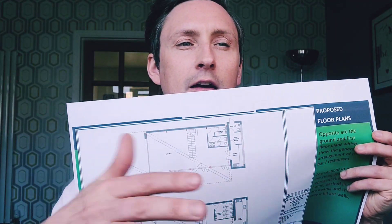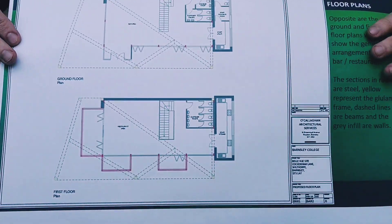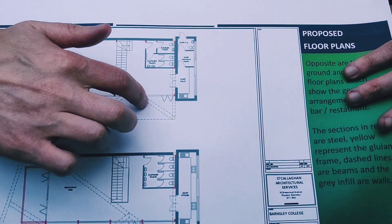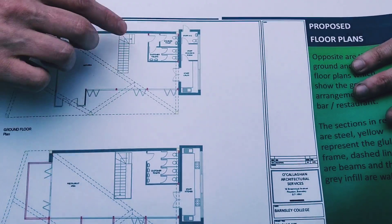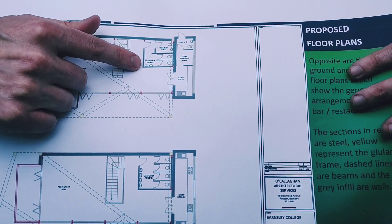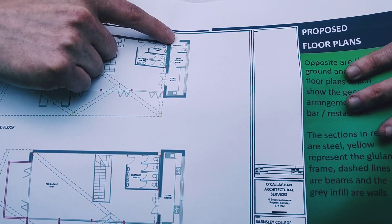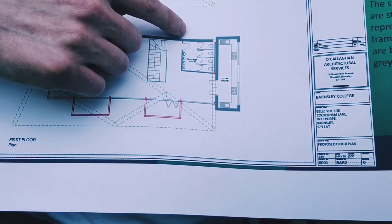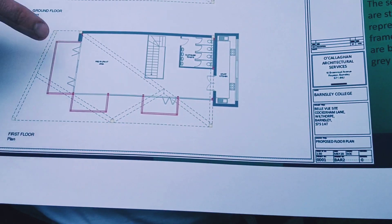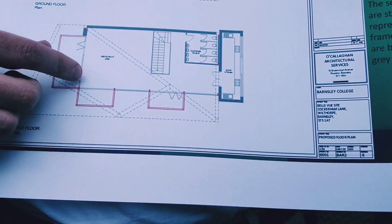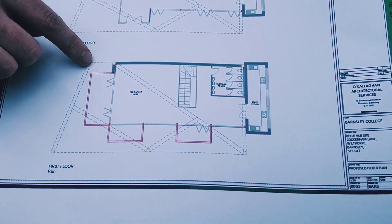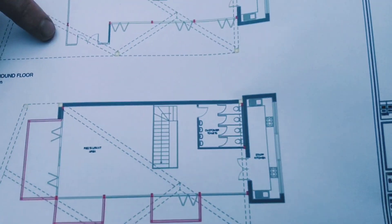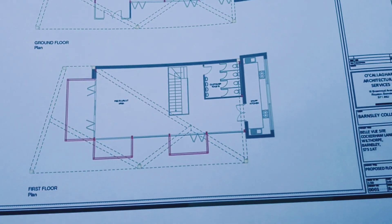Here are the floor plans for the proposed development. This is the ground floor plan, featuring access bifold doors which open out onto the seating area, stairs which go to the first floor, a disabled bathroom, customer toilets, kitchen, staff changing room and staff WC. On the first floor, accessed via the steps, there are more customer toilets, another kitchen for the restaurant, and balconies for customers to sit out on accessed by bifolding doors. The dashed lines represent the glulam frame, the yellow squares represent timber, and the red sections indicate the steel frame.